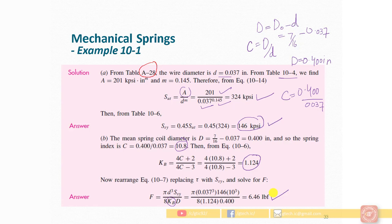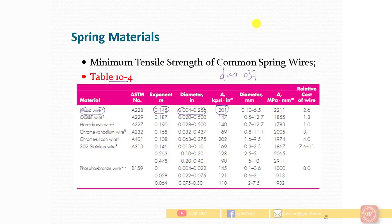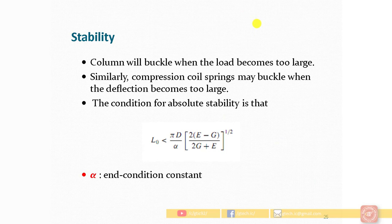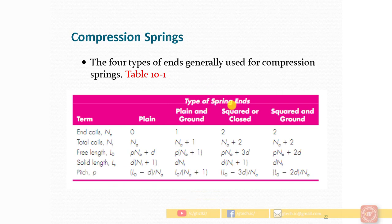Next we calculate the spring scale (spring constant k). The formula is k = (d⁴ × G) / (8 × D³ × N_a), where N_a is the active number of coils and G is the modulus of rigidity. Since we have total coils given, we need to find the active number of coils from table 10/1.